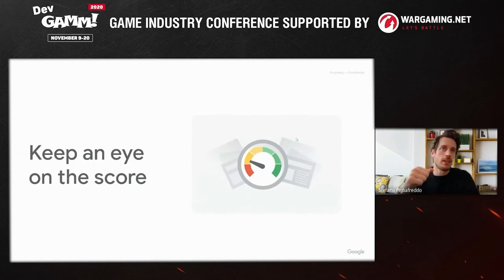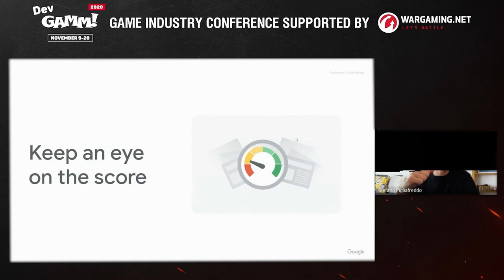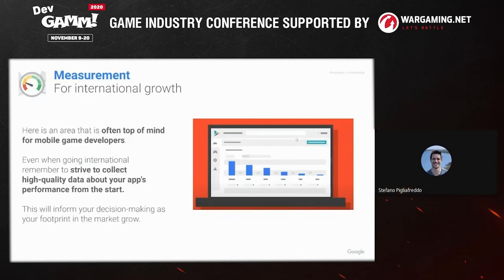So now we're in full playing mode and we want to keep an eye on the score. What we want to make sure to do is have proper measurement in place. Measurement is often top of mind for mobile game developers, which is great — it's a default mindset. It's just a reminder to really incorporate the international dimension from the get-go, because having high-quality data from the beginning really helps your decision-making process when you start expanding into a new market.